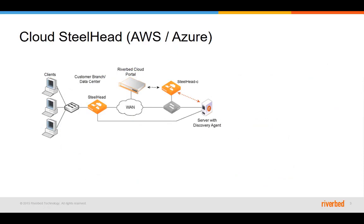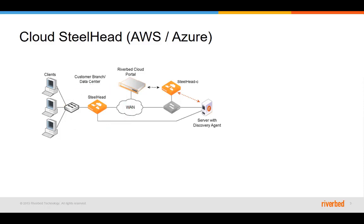Now we will discuss the Cloud Steelhead. This is a typical Cloud Steelhead deployment where we have a regular branch Steelhead and a Cloud Steelhead deployed in either AWS or Azure clouds.